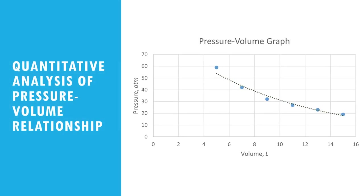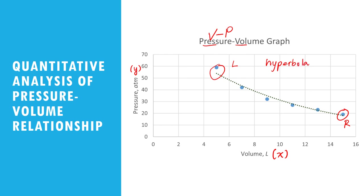From the previous data, this is its graph. Volume is on the x-axis as the independent variable, and pressure is on the y-axis. Comparing it with the first pressure-volume graph, both have almost the same shape — a curve going from upper left to lower right. This is called a hyperbola or hyperbolic curve, showing that when x increases, y decreases.